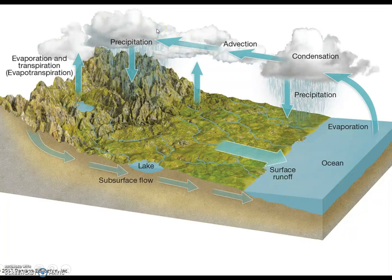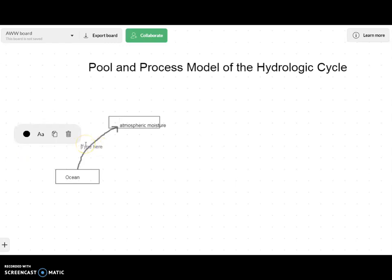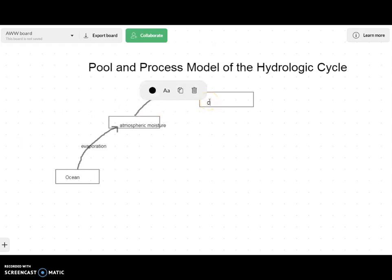Let's see what this would look like on a pool and process model. We've started with our ocean pool, and this pool up here will be atmospheric moisture. The process we name on the arrow is evaporation. In this week's assignment, you'll be creating a pool and process model, perhaps using this program on the web whiteboard. Your model will have probably six pools and eight processes. I've given you a head start by identifying three of the pools and at least one of the processes, so you'll just continue on from here developing your own model.